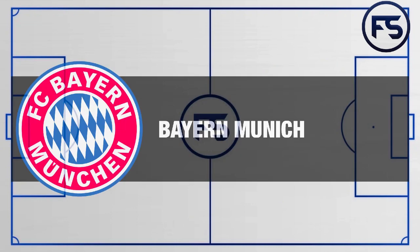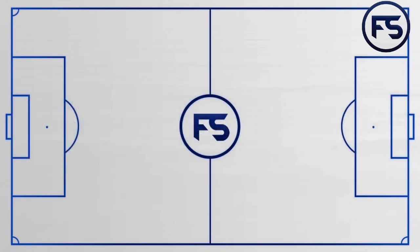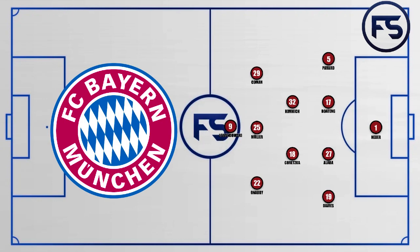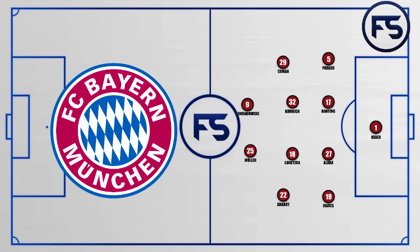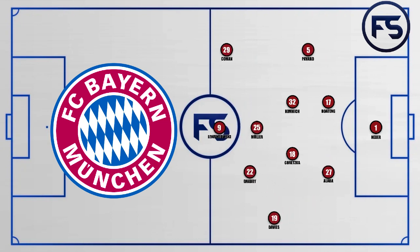Bayern Munich lined up with a 4-2-3-1. In the defensive phase they switched into a 4-4-2, and in the attacking phase Davies, the left-back, moved higher than right-back Pavard. Müller, Gnabry and Coman often switching positions in the attacking phase.